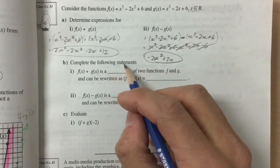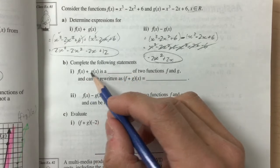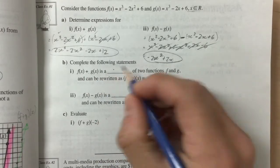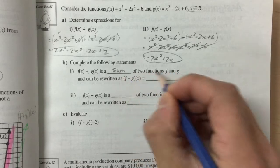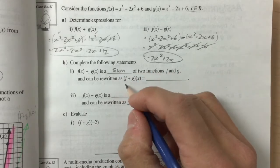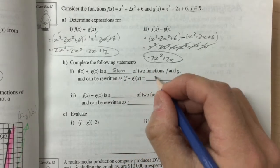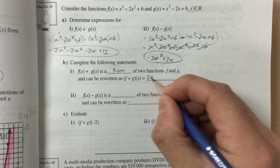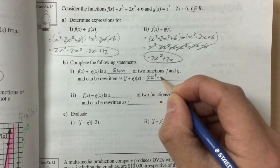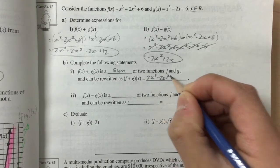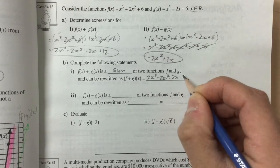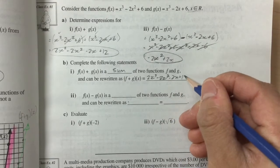Now if we complete the following statements, f of x plus g of x is a sum of two functions, f and g, and can be written as f plus g of x is equal to 2x cubed minus 2x squared minus 2x plus 12.